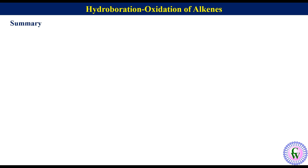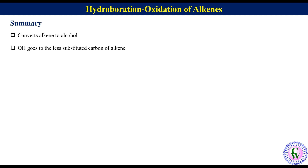Now we will go through the summary of what we learned about hydroboration oxidation of alkenes. If you remember these summary points, you will be able to solve most of the problems based on hydroboration oxidation. The key points are: in hydroboration oxidation of an alkene, an alkene is converted to an alcohol. OH goes to the less substituted carbon of the alkene — that is, it is equivalent to anti-Markovnikov addition of water to an alkene. And addition of H and OH is in syn fashion, meaning H and OH add to the same face of the alkene.